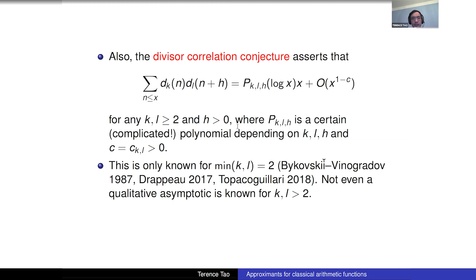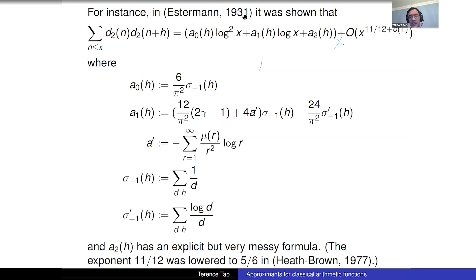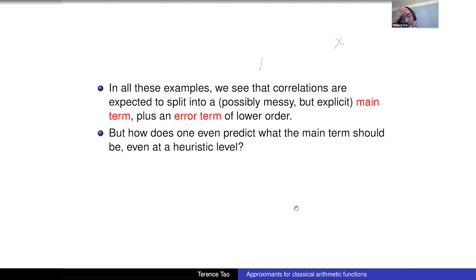To give a sense of how complicated these polynomials are: even when k=l=2 the formula is quite complicated — a polynomial in log x whose coefficients depend on the shift h in a complicated way. The formula for the leading coefficient and second coefficient are already involved; for the next coefficient it's so complicated it wouldn't fit on the slide. The error term is at least x^{1/12} better than the main term, shown by Ingham in the 1930s and improved slightly to x^{5/6} in the 70s.